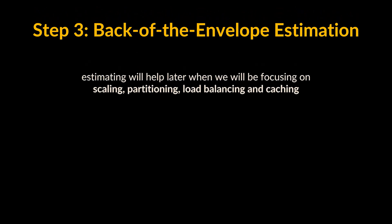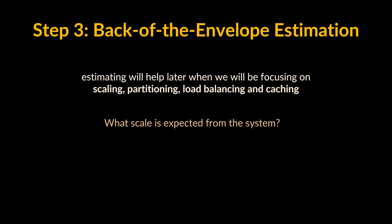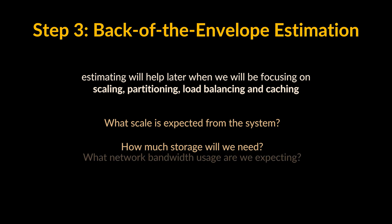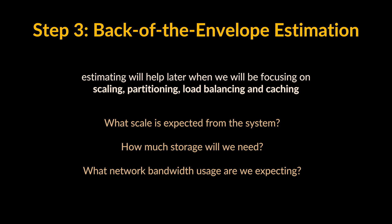Step three: back of the envelope estimation. It is always a good idea to estimate the scale of the system we're going to design. This will also help later when we focus on scaling, partitioning, load balancing, and caching. A few questions should be answered: What scale is expected — such as the number of new posts, the number of post views, the number of timeline generations per second? How much storage will we need — with different numbers if users can have photos and videos? What network bandwidth usage are we expecting? This will help us decide how to manage traffic and balance load between servers.